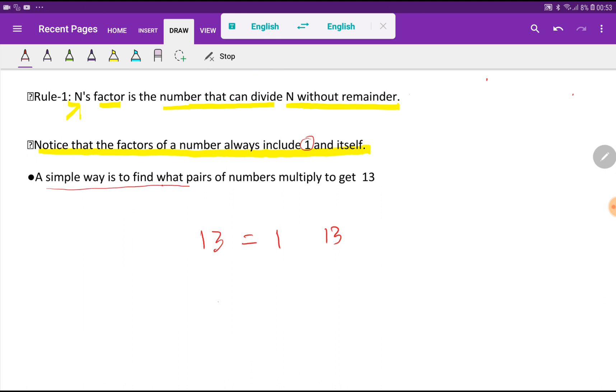A simple way is to find what pairs of numbers multiply to get 13. So if I multiply 1 times 13, then I will get 13.